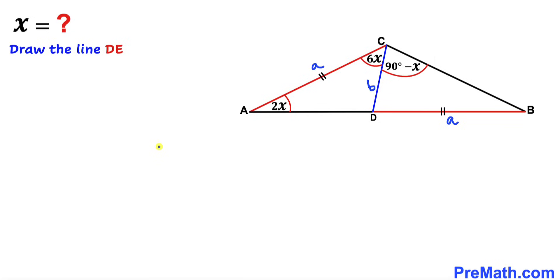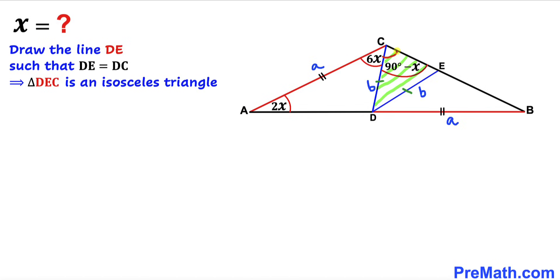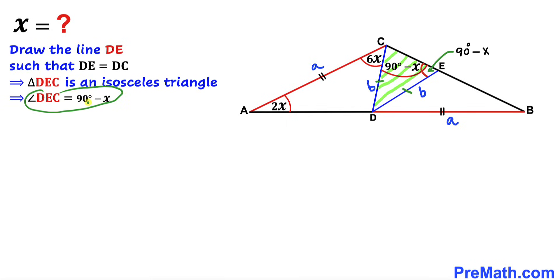Let's draw some auxiliary lines to make our job easier. I'm going to draw line DE such that side length DC equals side length DE, so DE must equal lowercase b as well. Therefore triangle DEC is an isosceles triangle. Since angle BCD is 90 degrees minus x, the base angles are equal, so angle DEC is also 90 degrees minus x.